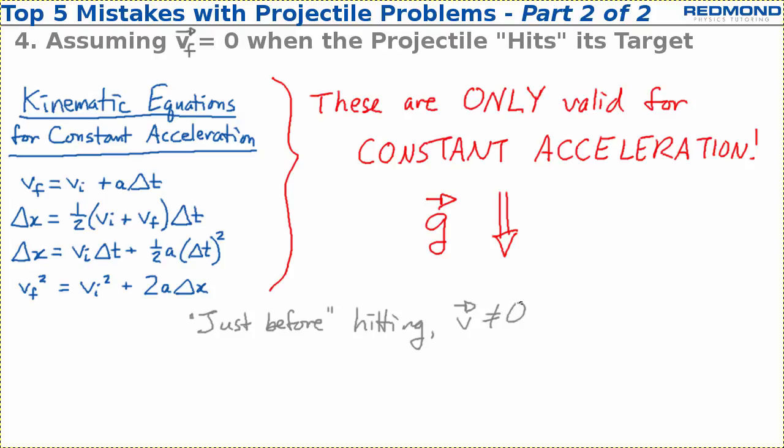If the projectile's velocity is zero after hitting the target, the deceleration, which is just acceleration in a different direction, was caused by normal forces the target exerted on the projectile.